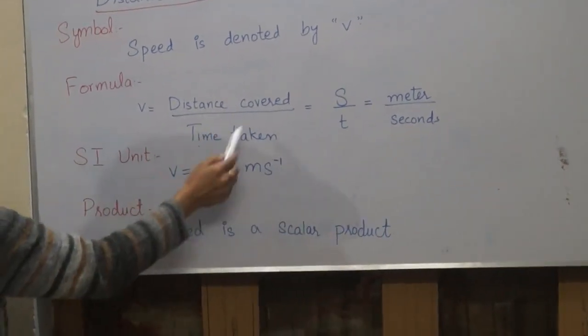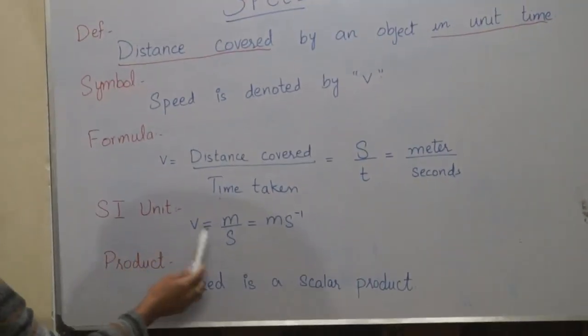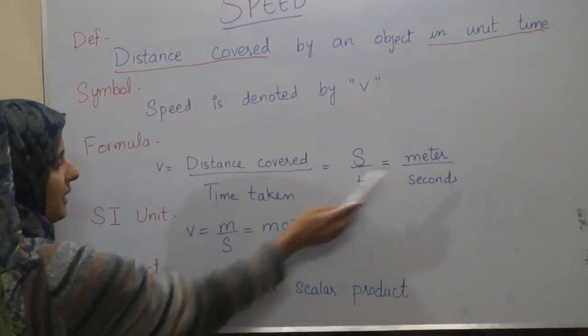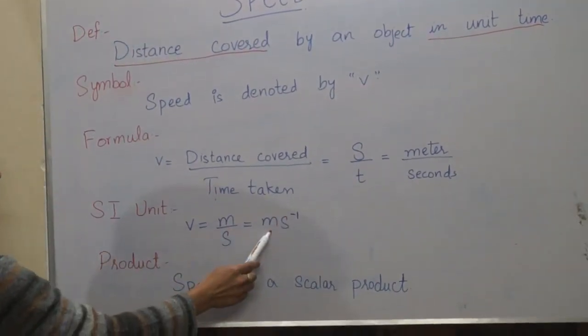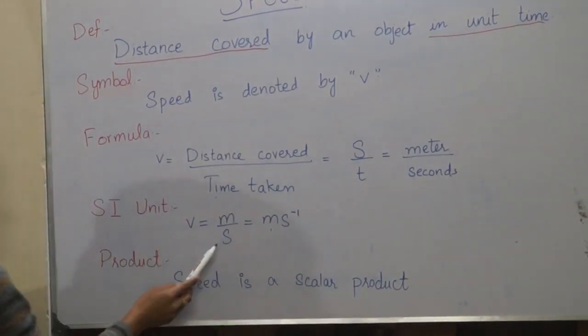So, from this formula, we can derive the SI unit of speed. SI unit of speed is meter per second. Abbreviation of meter is M and abbreviation of seconds is S.